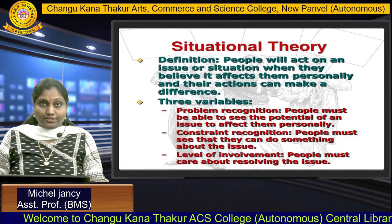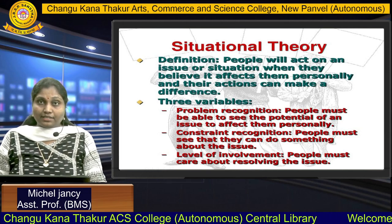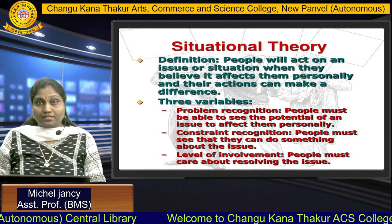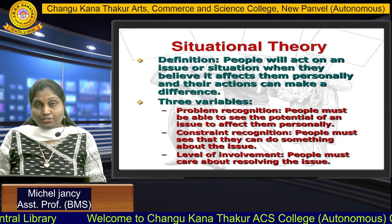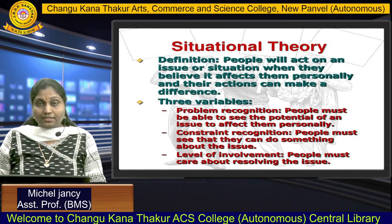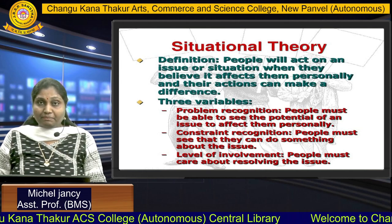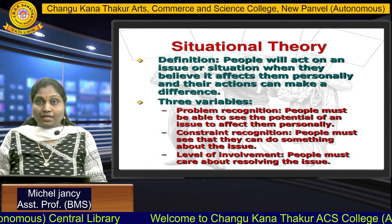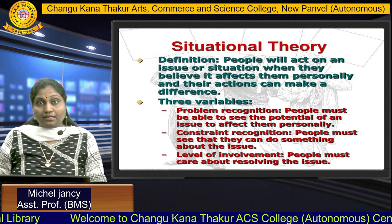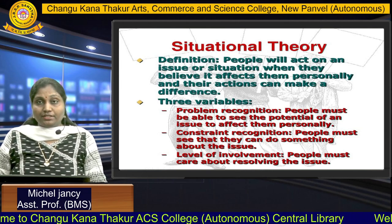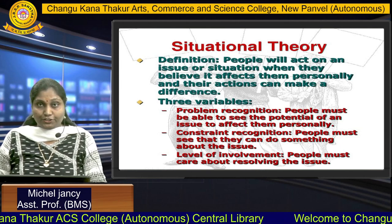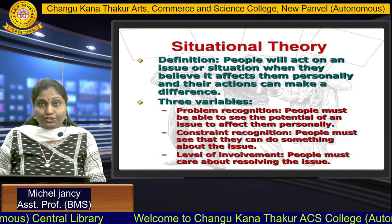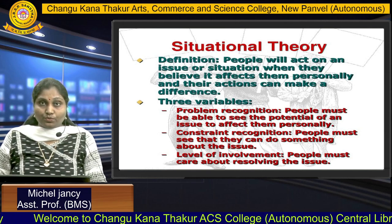The next theory is the Situational Theory, put forth by Groenig in 1975. It states that people will act on an issue or situation when they believe it affects them personally and their actions can make a difference. It deals with 3 variables: Problem Recognition, Constraint Recognition, and Level of Involvement. People seek information only when they need it; constraint recognition means people see they cannot do something about the issue; and in level of involvement, people must care about resolving the issue and will communicate to sort it out.